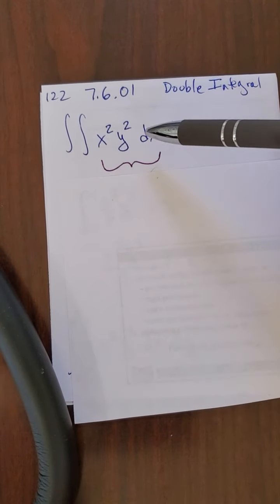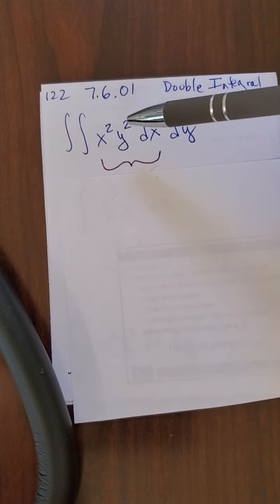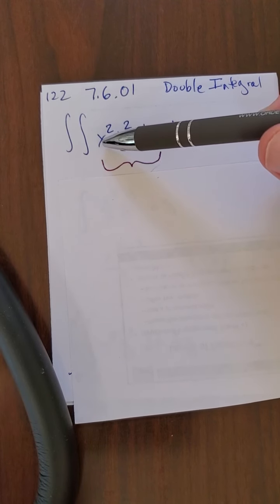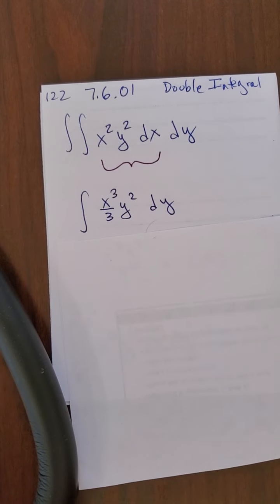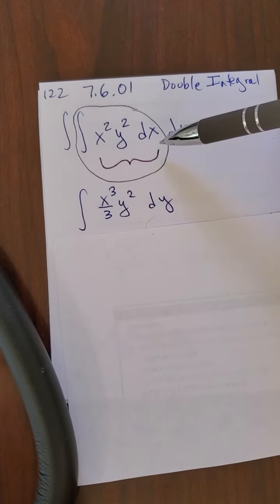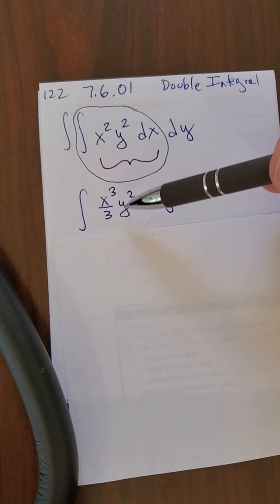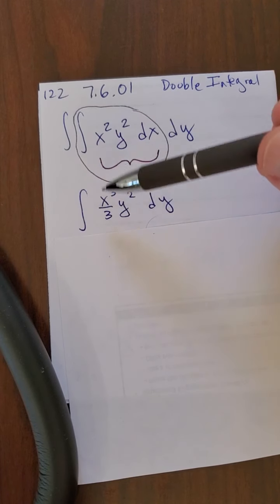Now the integral of x squared y squared dx. Remember now, since I'm integrating with respect to x, just like we did in partial derivatives, I'm going to treat the y squared like a constant, and I'm just really going to get the antiderivative of x squared, which we all know is x cubed over 3. So that's going to leave me with this. This whole middle thing just turned into x cubed over 3 times y squared, because the y squared is just a constant, just comes down, and the x squared becomes x cubed over 3.